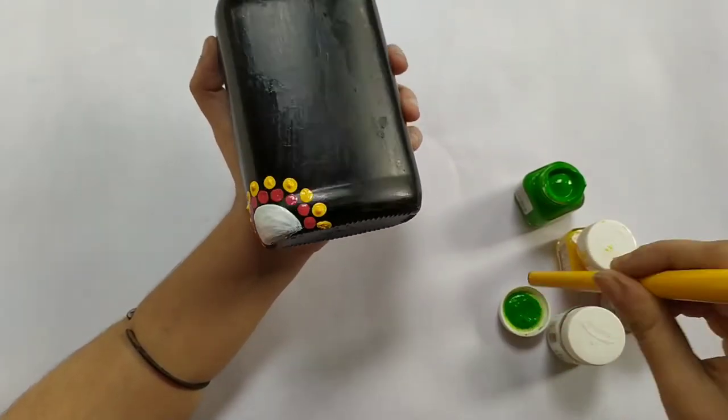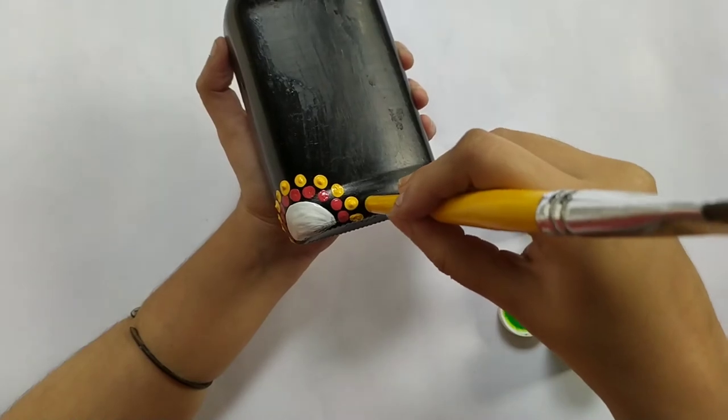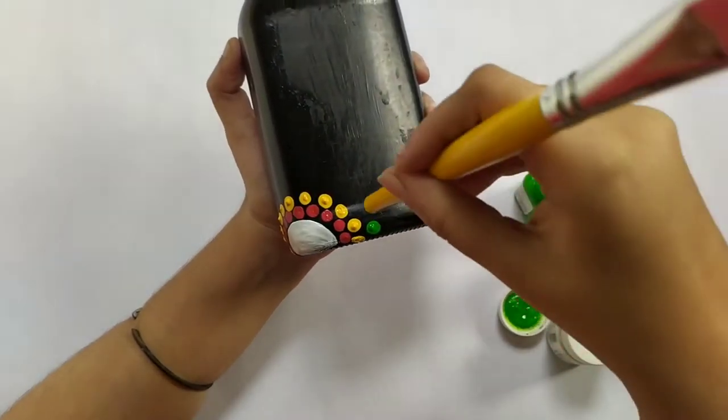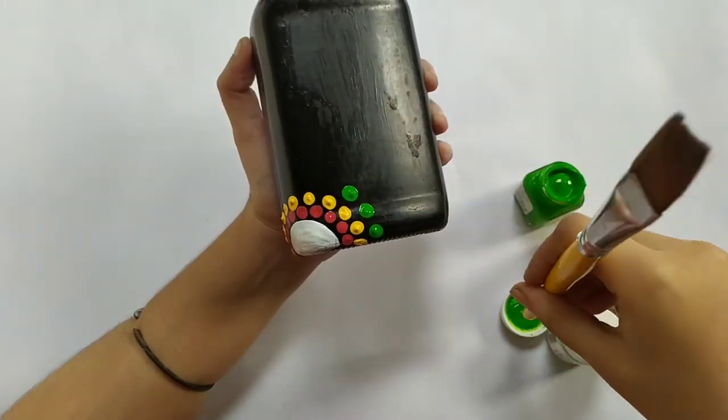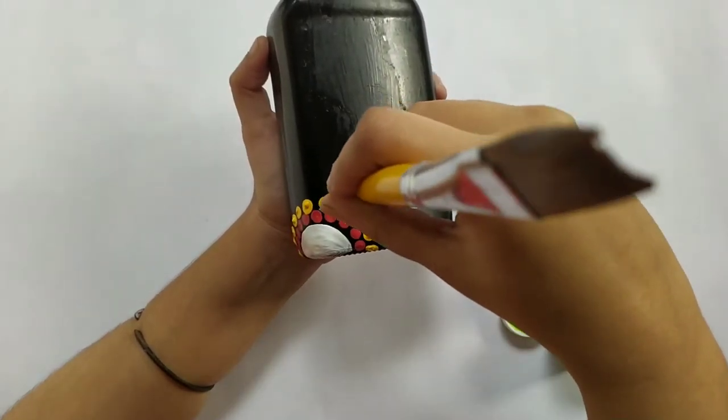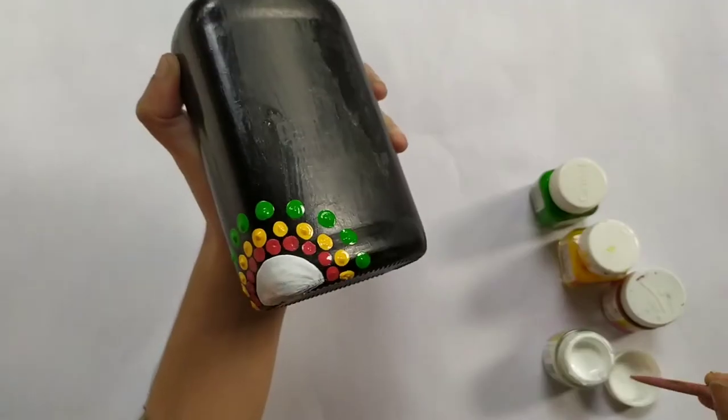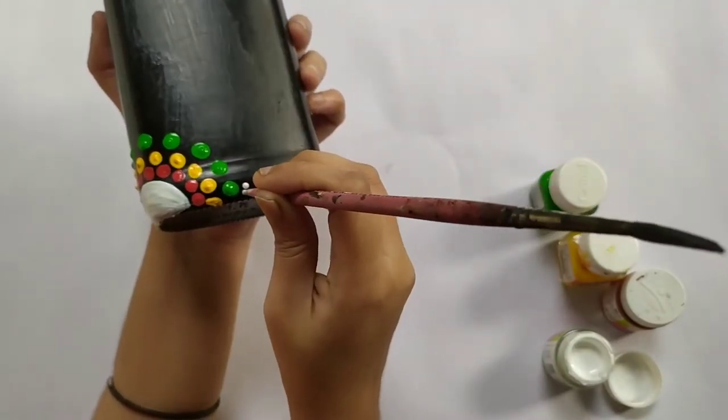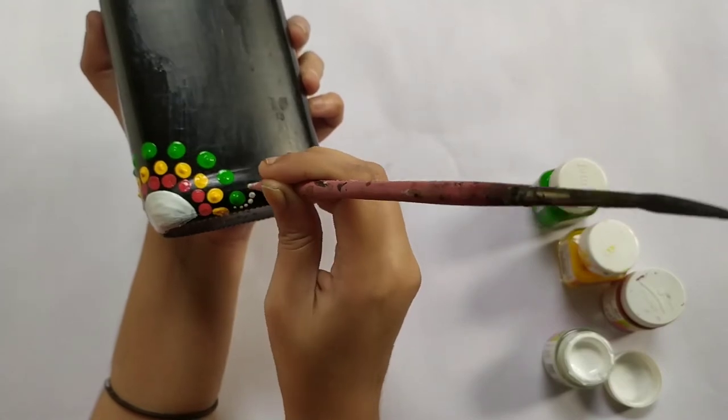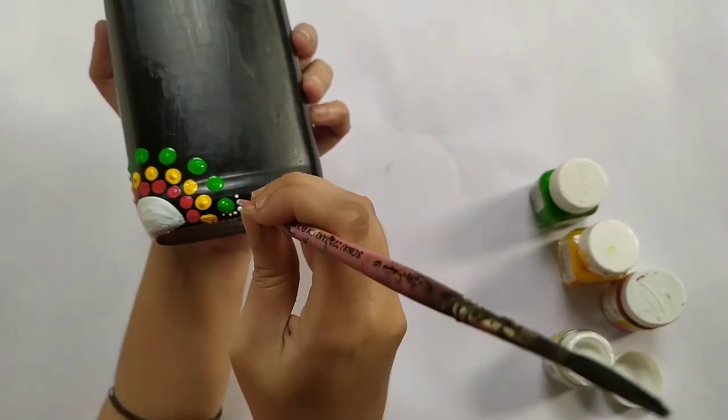After that I am using the back side of a brush. Now I am using the back side of a smaller brush to make small dots around them.